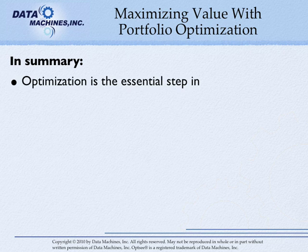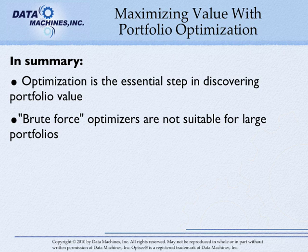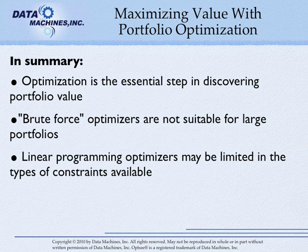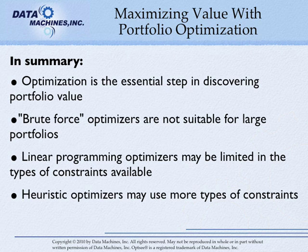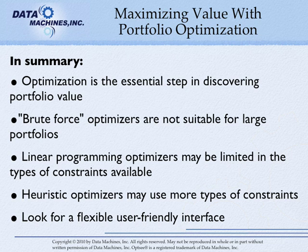In summary, optimization is the essential step for discovering portfolio value. Brute-force optimizers are not suitable for large portfolios. Linear programming optimizers can find optimal solutions but may be limited in the types of constraints available. And heuristic optimizers can find optimal and near-optimal portfolios quickly with more types of constraints. Look for a flexible, user-friendly interface and the ability to easily compare portfolios with different optimization constraints.